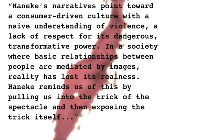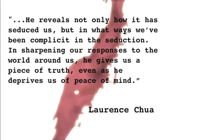How does he set out this thesis of the media's duplicity? He does it not through an essayistic form, but through narrative frameworks that dramatise crises of truth, of memory, and in some cases class relations. These are, to an extent, essay films, but they're built around quite traditional thriller plots. According to Lawrence Chaw, Haneke's narratives point toward a consumer-driven culture with a naive understanding of violence and a lack of respect for its dangerous transformative power. In a society where basic relationships between people are mediated by images, reality has lost its realness. Haneke reminds us of this by pulling us into the trick of the spectacle and then exposing the trick itself — revealing not only how it has seduced us, but in what ways we've been complicit in the seduction.